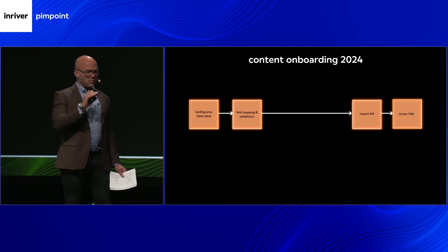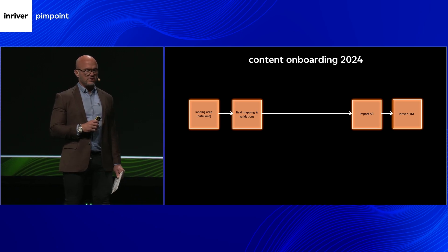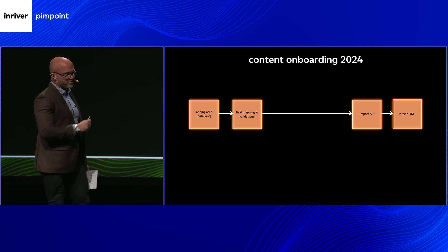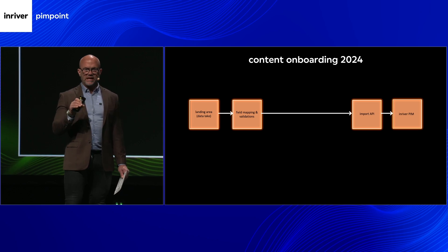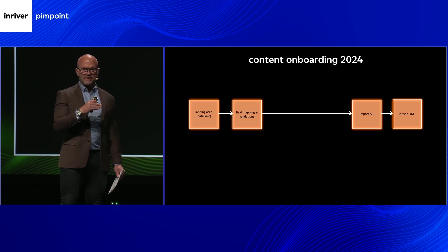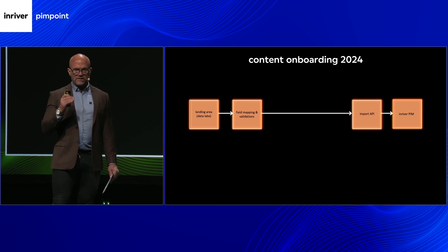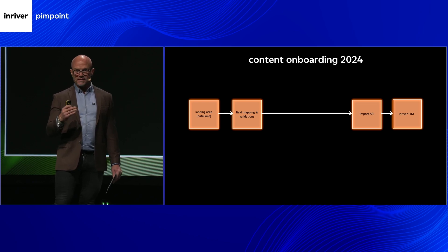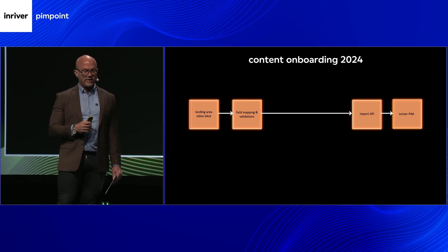Looking further into the future — and this is what really excites me — we will spend time this year further evolving the solution. We're doing a lot of work on the landing area, seen on the left, where customers can upload multiple raw data files. The mapping you saw today will already be done for the files. You can upload hundreds of thousands or millions of rows to the landing area, they're processed in the background, and you receive a ticket number per file to track progress.